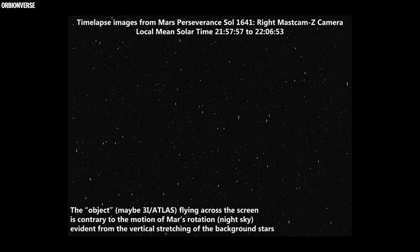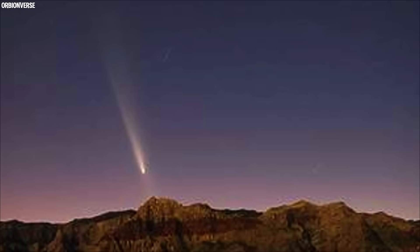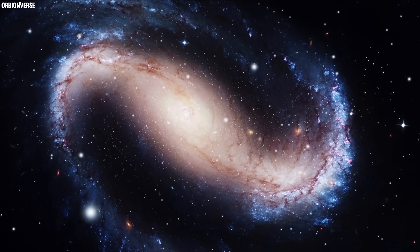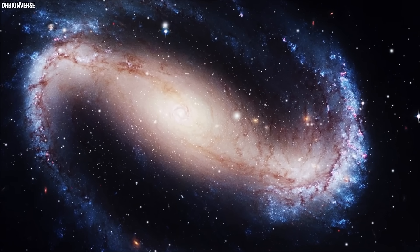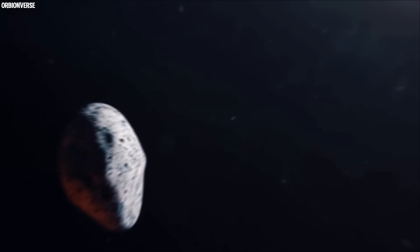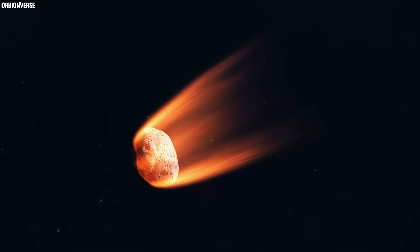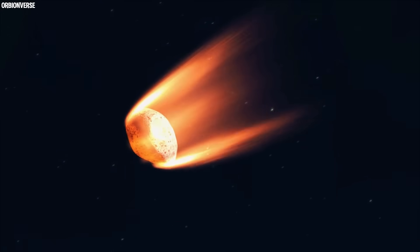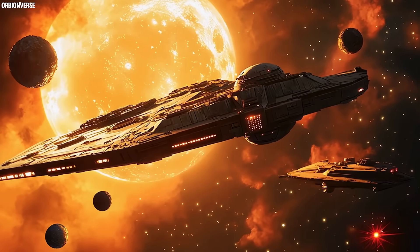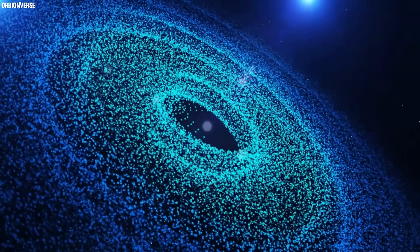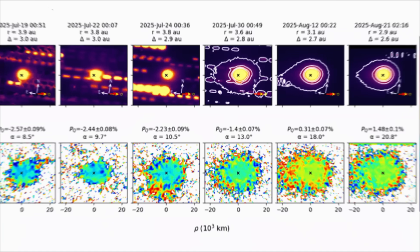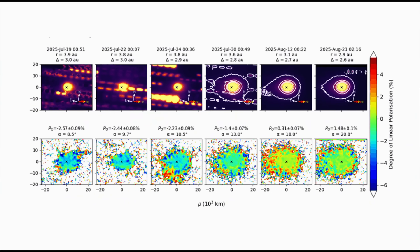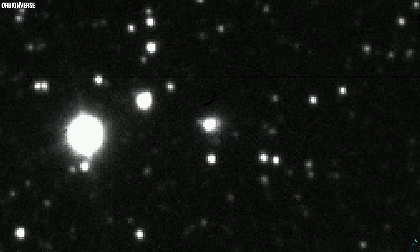But let's return, for a moment, to that eerie image from Mars. The stripe that started it all. Science can explain the pixels, the motion blur, the exposure times. But what it cannot explain is why so many people feel that this moment means something. Perhaps it's because, deep down, we recognize that space isn't empty. That every visitor from the stars is a story, not just an object. A question sent across the galaxy, waiting for an answer. What if 3I/ATLAS isn't just a comet, but a messenger? A relic of a distant civilization's ancient system, drifting aimlessly until it found us? Or what if it's something nature itself built? A cosmic sculpture shaped by forces we barely understand? These are the thoughts that keep astronomers awake, staring at their screens long after the data stops coming.